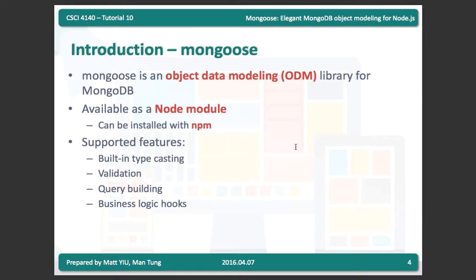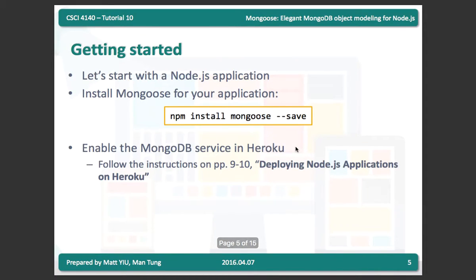Mongoose has many supportive features like built-in typecasting, validation, query building, and business logic hooks. These features are for your convenience during development. For example, you often need to do data validation for your database, and you don't want to write it yourself — this library provides those features for you. Let's see how to use the Mongoose library.